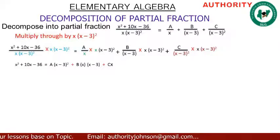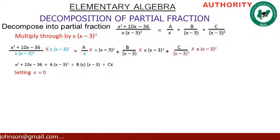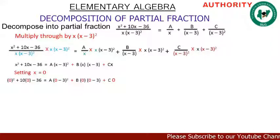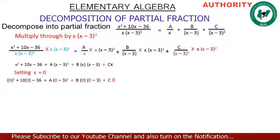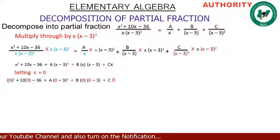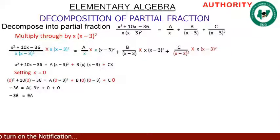Now from here, let's set one of the factors equal to zero. Setting x equal to 0, wherever we see x we replace it with 0. So we get: 0 squared plus 10 times 0 minus 36 equals A times (0 minus 3) squared plus B times 0 times (0 minus 3) plus C times 0. On the left-hand side we have minus 36.